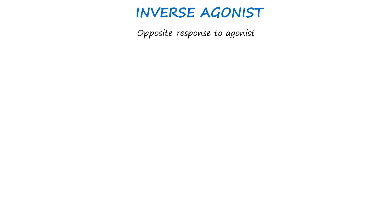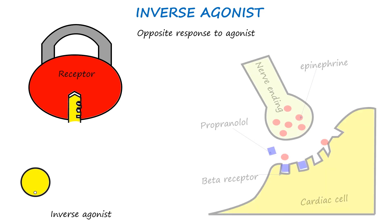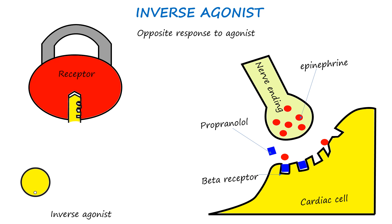Inverse agonists are more complex. While an agonist activates a receptor and an antagonist blocks it, an inverse agonist binds to the same receptor but produces the opposite effect of an agonist — like turning a key the wrong way, jamming the lock. Propranolol is an example of an inverse agonist acting at beta receptors. It not only blocks the effects of adrenaline but also reduces the basal or intrinsic activity of these receptors. The key difference from an antagonist is that the inverse agonist reduces receptor activity below baseline, whereas an antagonist simply blocks binding of endogenous hormones or peptides.